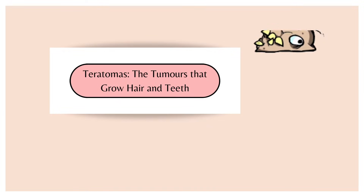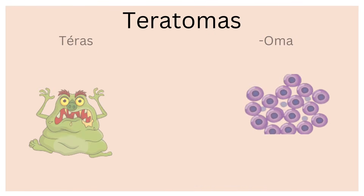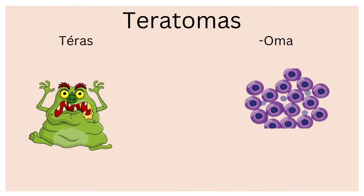Everybody knows what cancer is, and that a tumor is a growing lump of cells. But have you ever heard of a tumor growing hair and teeth before? This is a special type of tumor known as a teratoma. Interestingly, the name comes from the Greek word teras, which means monster, and oma means tumor — so teratoma actually means monster tumor.